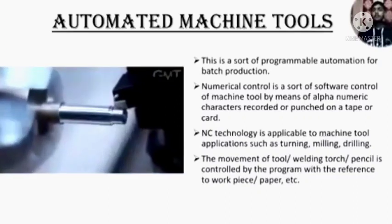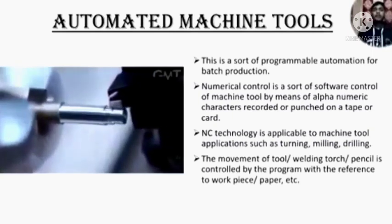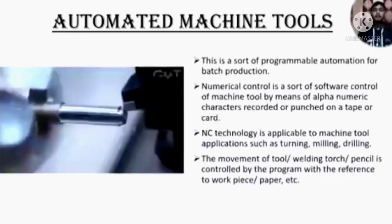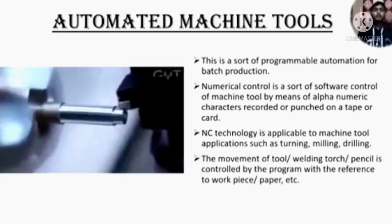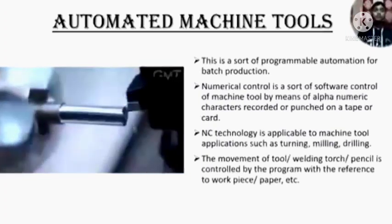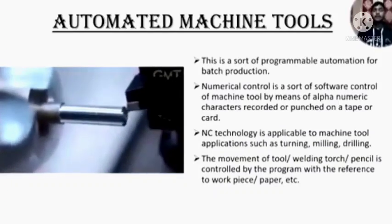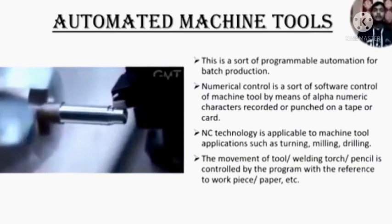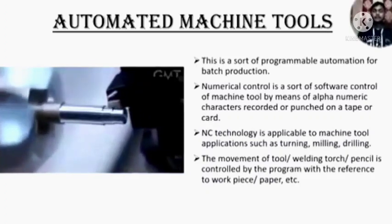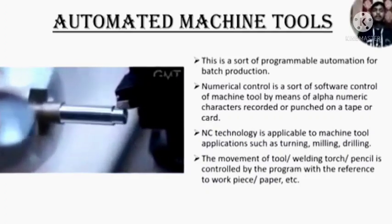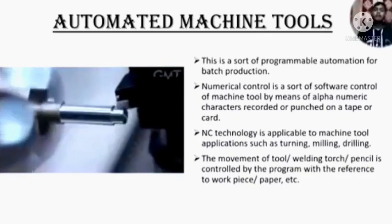Now we come to the topic of automated machine tools. This is a sort of programmable automation for batch production — that is mid-volume, mid-variety — mainly using CNCs. Numerical control is a sort of software control of machine tools by means of alphanumeric characters recorded or punched on tape or card. Numerical control technology is applicable to machine tool applications such as turning, milling, drilling, etc. The movement of the tool, welding torch, or pencil is controlled by the program with reference to the workpiece.